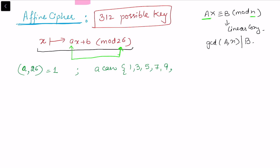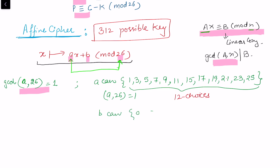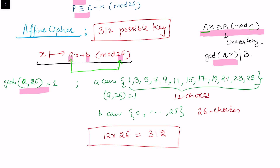These values are the only choices for a such that gcd(a, 26) = 1, giving 12 choices for a. The value b can take any value between 0 and 25, giving 26 choices for b. Taking the product, 12 choices for a times 26 choices for b gives 312 possible keys in the affine cipher.